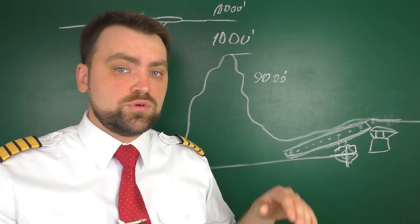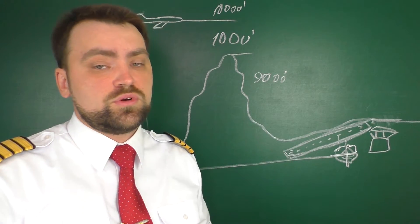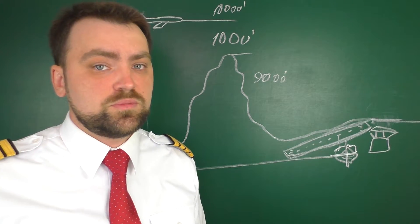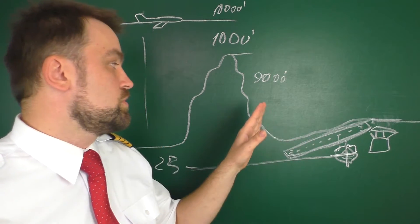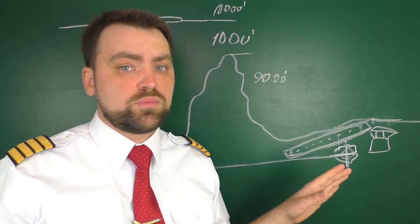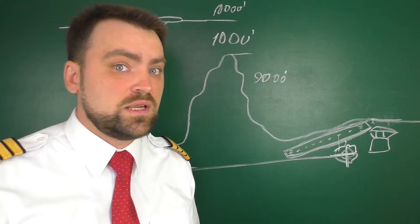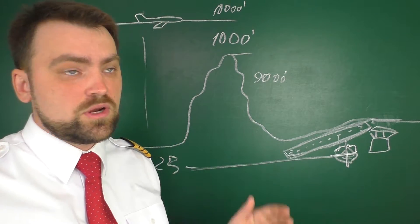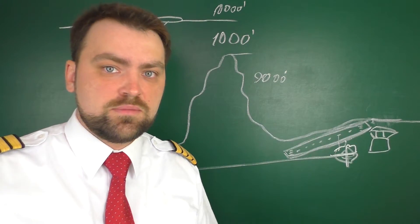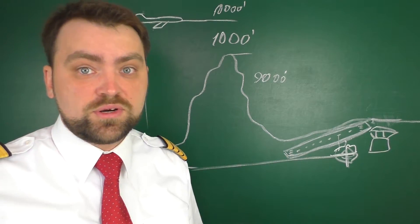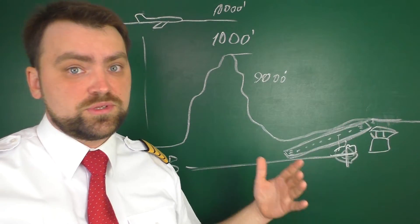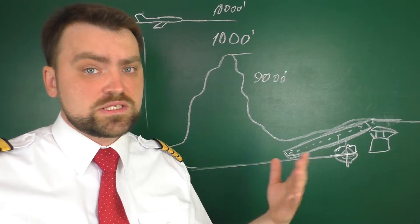By the way, when you go through your transition level, you need to reset the altimeters for local QNH — that's the local pressure relative to mean sea level. We are maintaining 10,000 feet, but we can't do that forever. We need to descend and land on that runway safely.